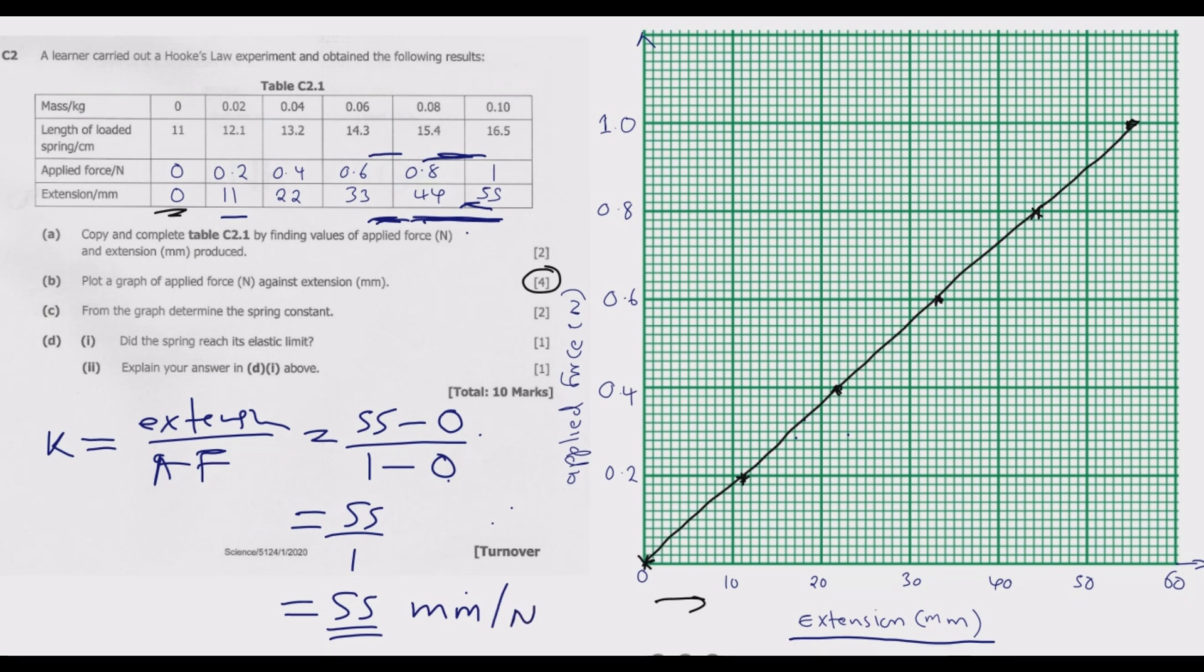Part D: Did the spring reach its elastic limit? No. Explain your answer: because the constant remained the same throughout the graph. As you can see, the graph has the same slope. If you had reached the elastic limit, this graph would be changed in this direction as shown in red.